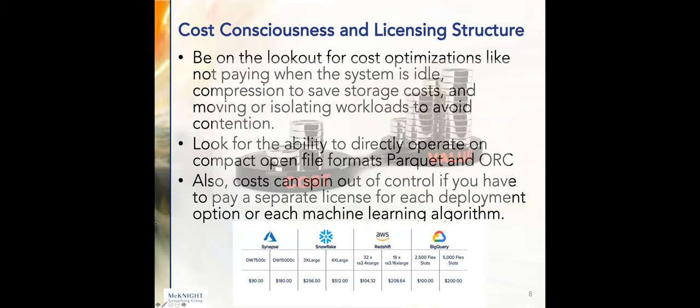Cost consciousness and licensing structure: be on the lookout for cost optimizations like not paying when the system is idle, compression to save storage costs, and moving or isolating workloads to avoid contention. I'm focused a lot on the cost aspect because that's where enterprises get surprises — and that can just sour the whole implementation.